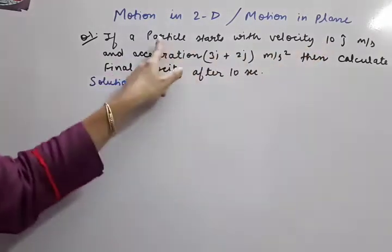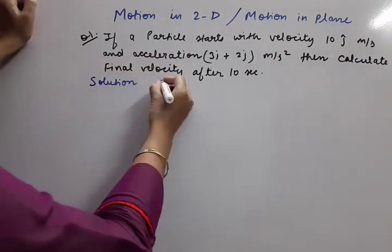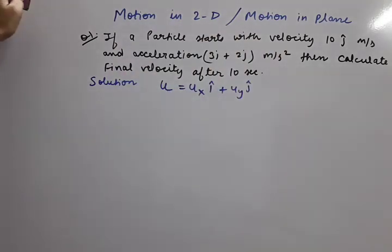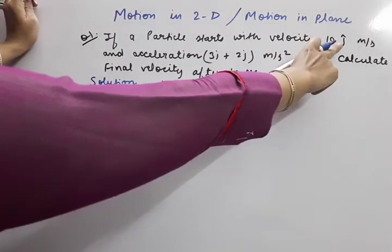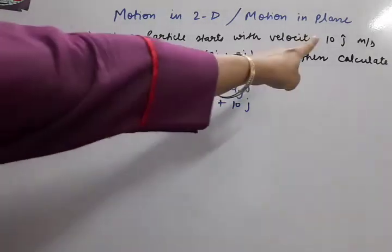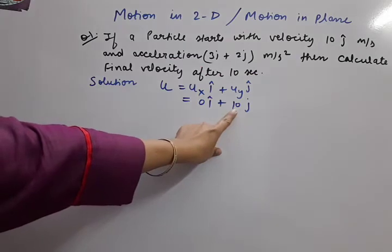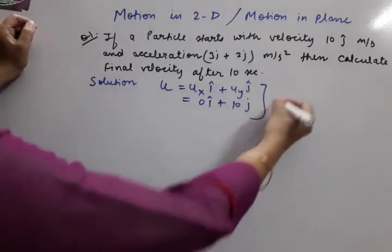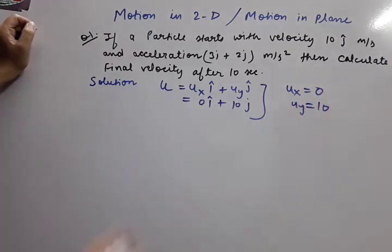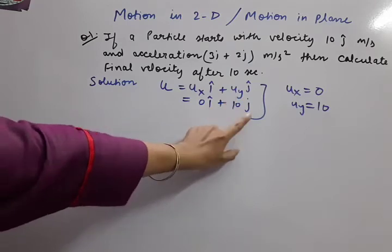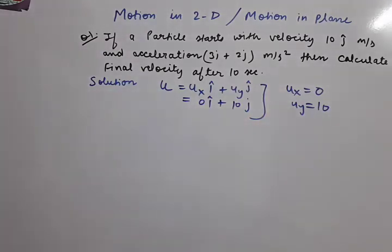A particle starts with velocity 10ĵ m/s. So initial velocity u in vector form is written as ux î + uy ĵ. Since only j component is given, we write 0î + 10ĵ. From this we get ux = 0 and uy = 10. The coefficient with î gives ux, so ux = 0. The coefficient with ĵ gives uy, so uy = 10.